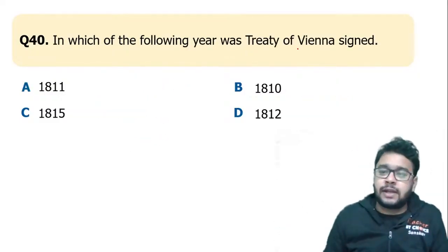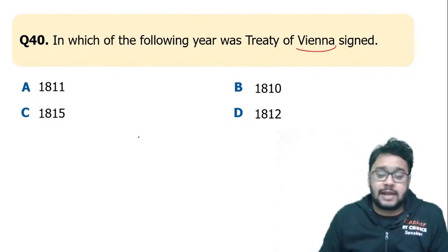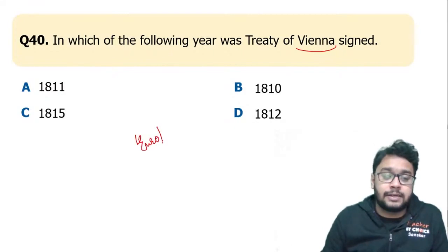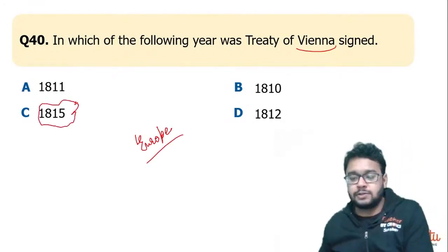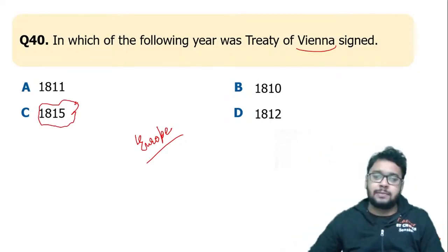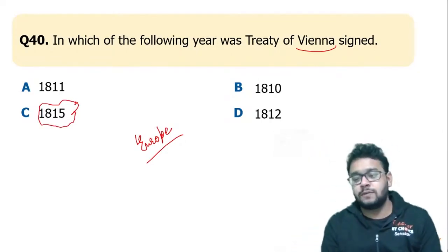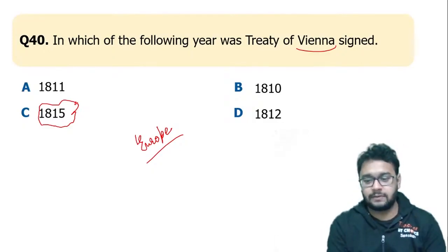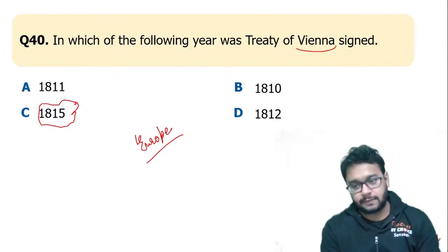In which year was the Treaty of Vienna signed? From the Rise of Nationalism in Europe chapter, the Treaty of Vienna was signed in 1815 by conservative leaders of different parts of Europe, who wanted to re-establish the conservative regime across Europe. So C — 1815 — is the correct answer.